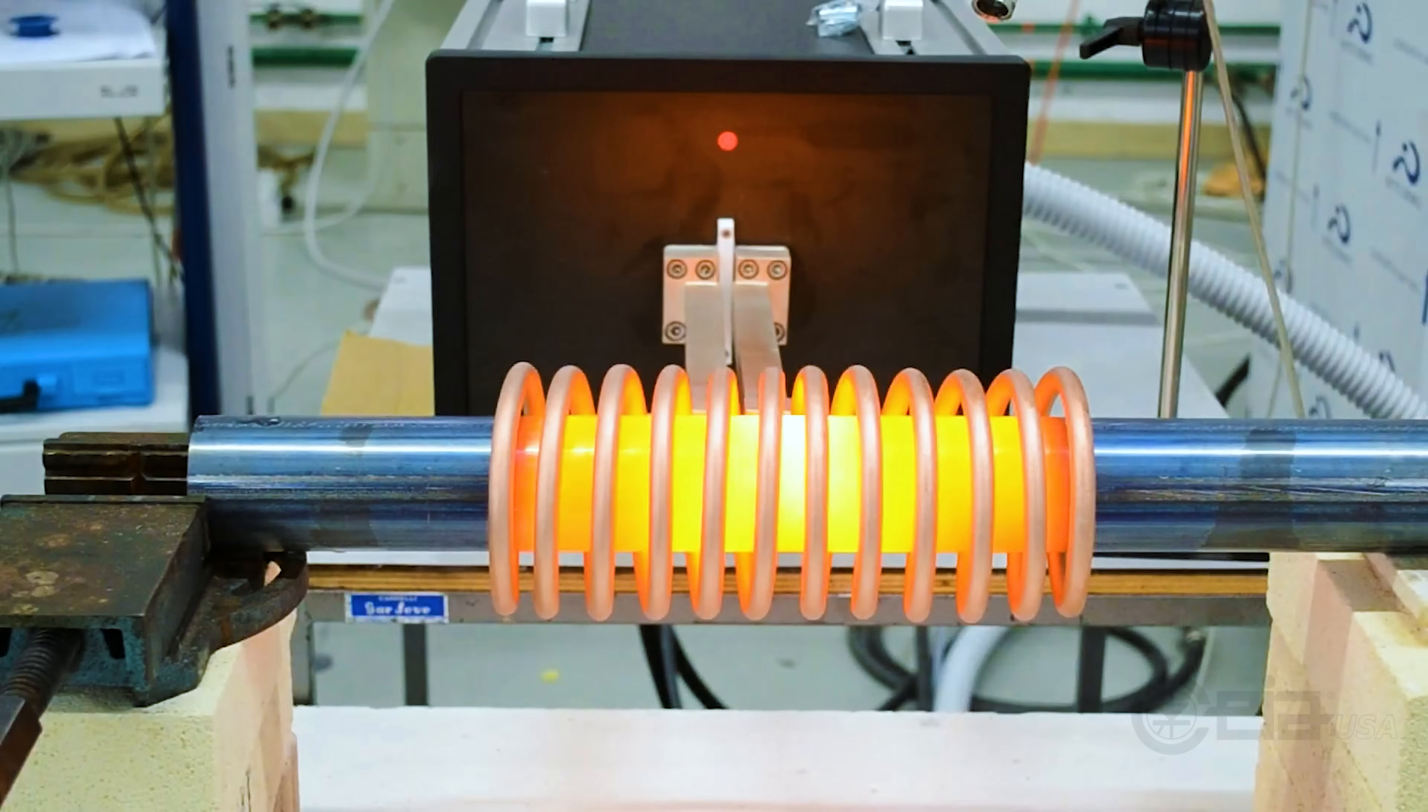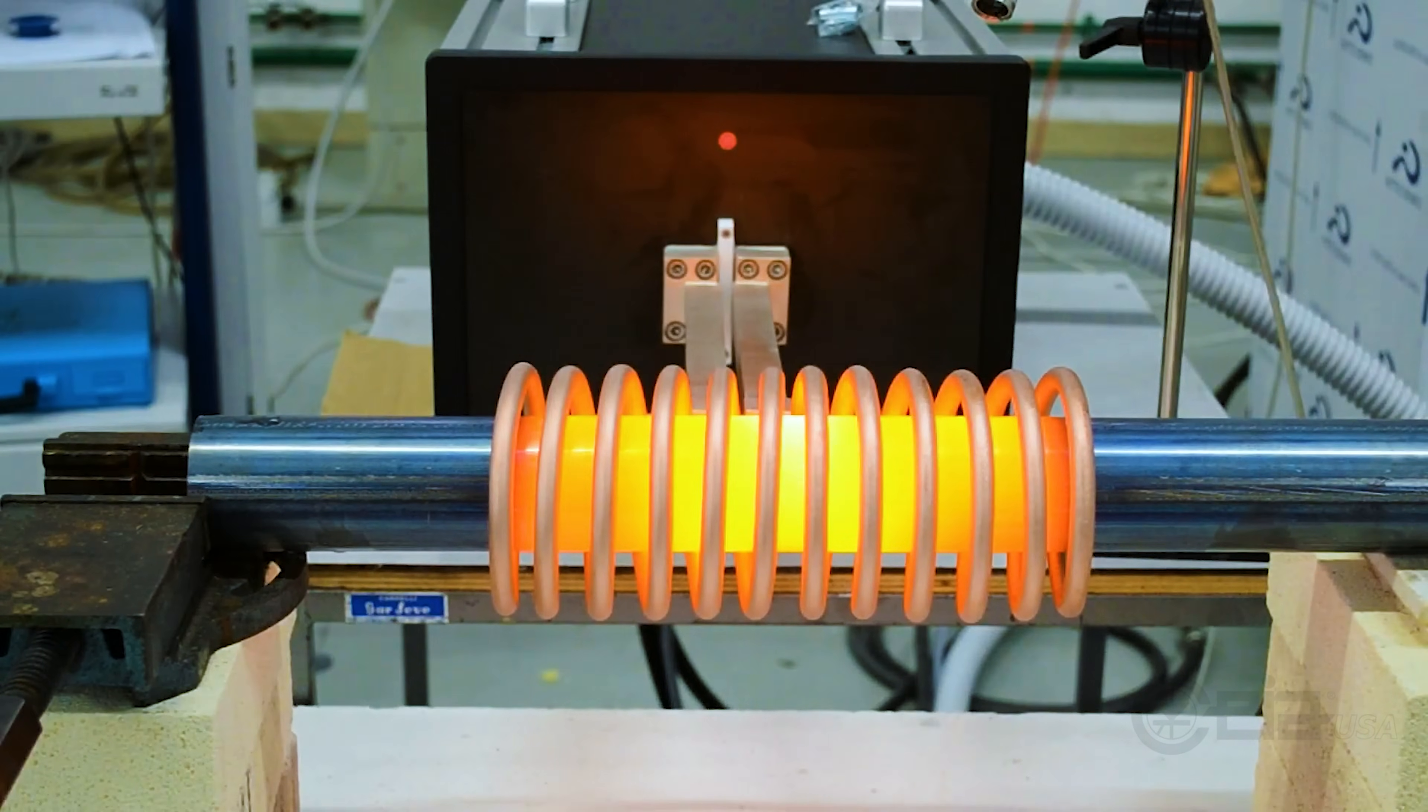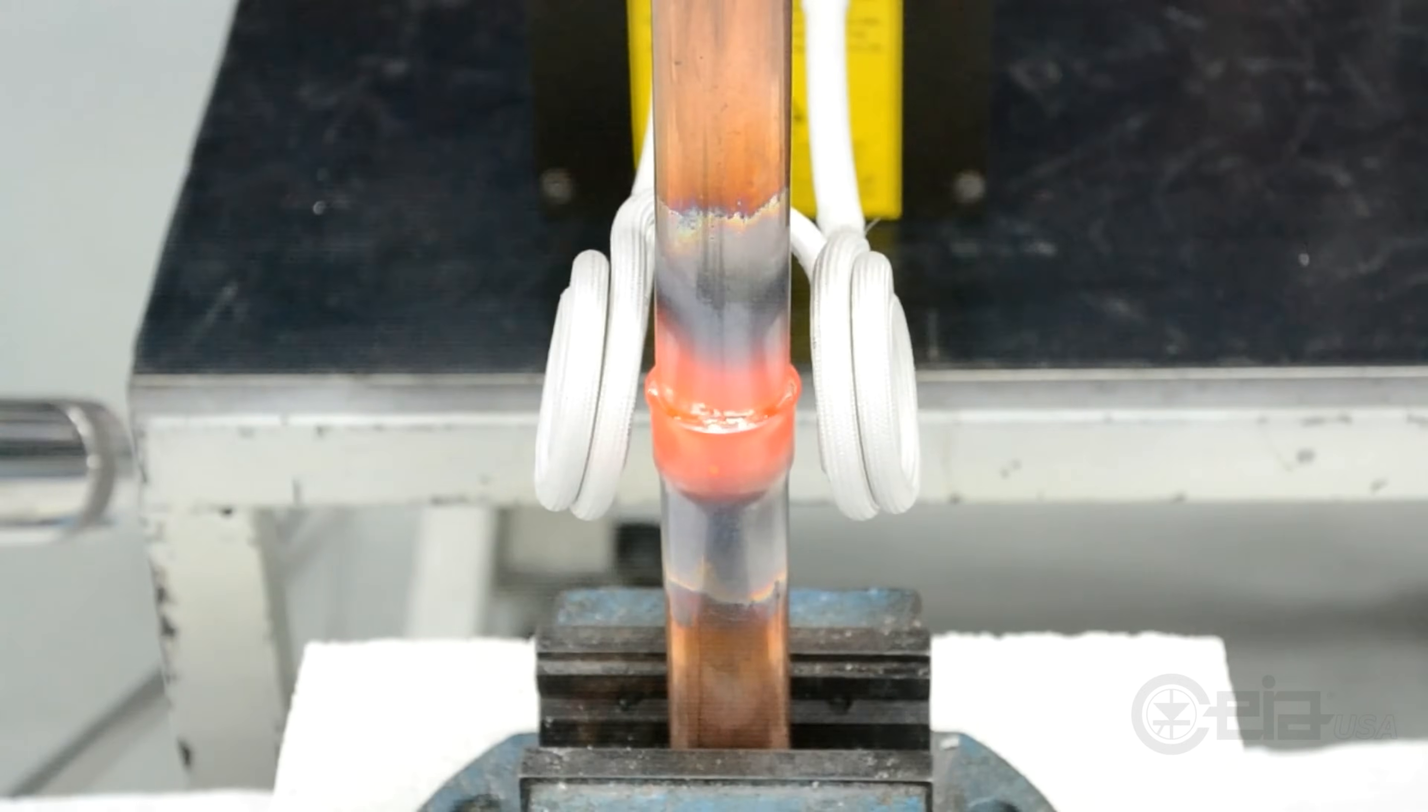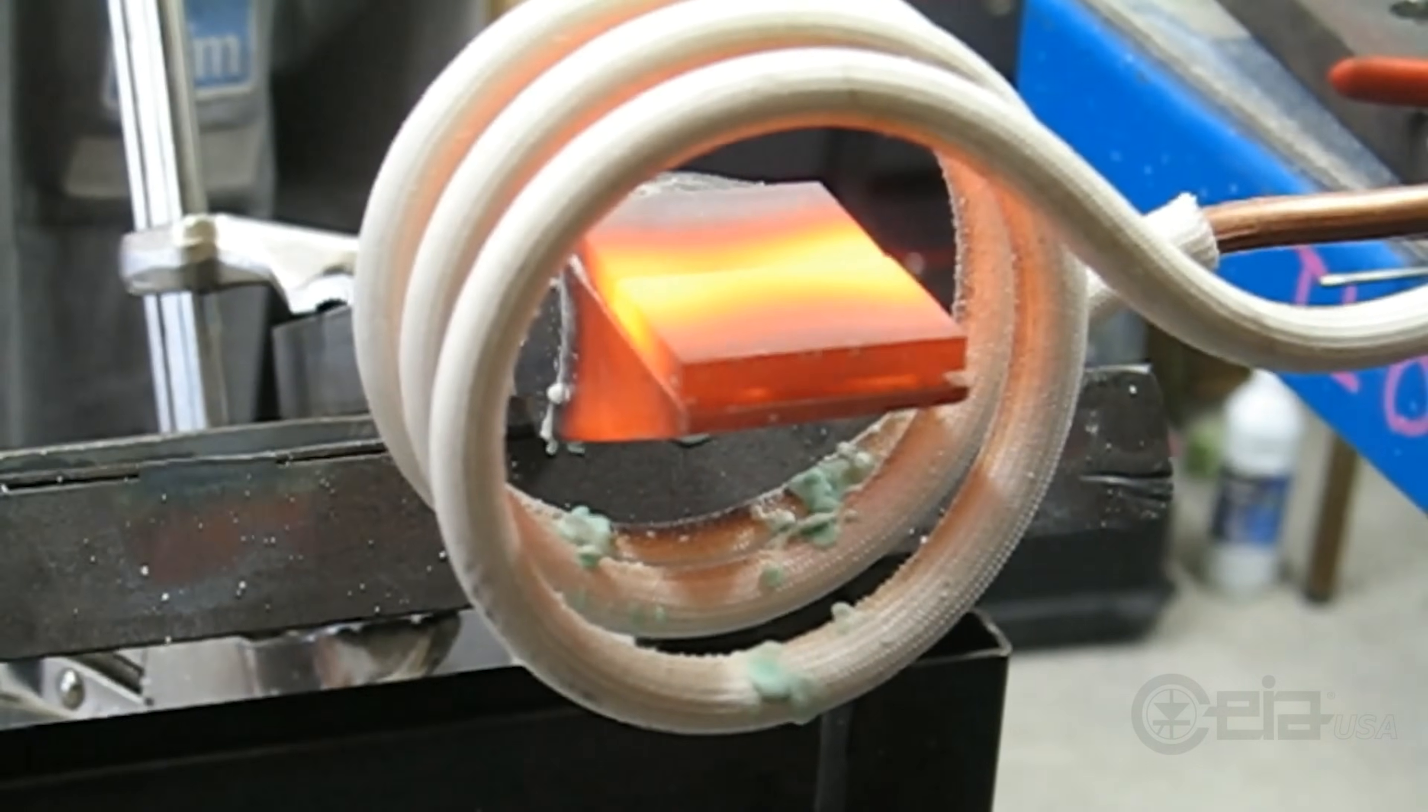Now, imagine this technology applied in your manufacturing process. Induction heating uses alternating electromagnetic fields to generate heat directly within the metal. This precise method allows for rapid, non-contact heating, making it perfect for demanding manufacturing processes.